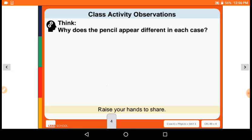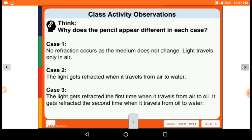Why does the pencil appear different in each case? The pencil appears this way because in case 1, no refraction occurs as the medium does not change - light travels only in air. But in case number 2, the light gets refracted when it travels from air to water. In the last case, the light gets refracted the first time when it travels from air to oil to water. That's why we can see it's broken at two points.